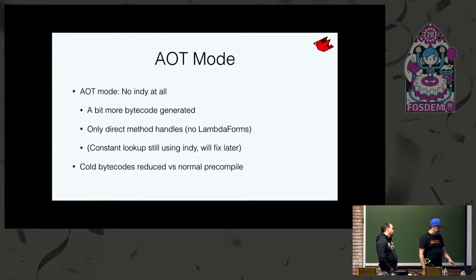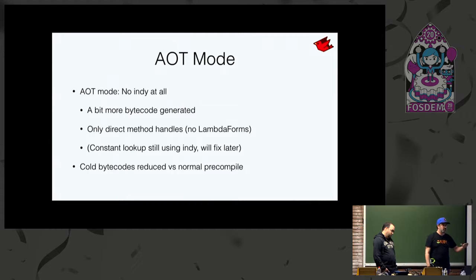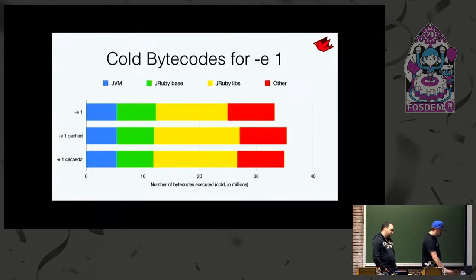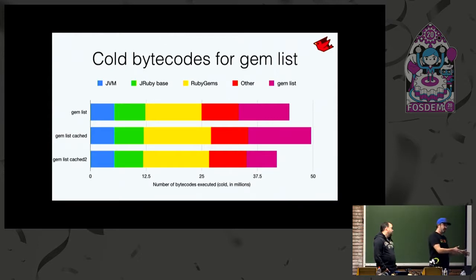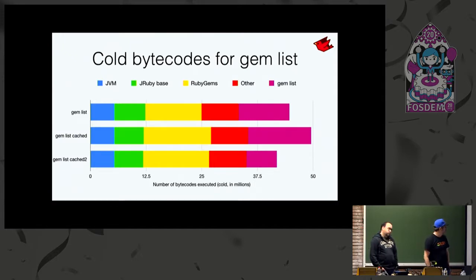The results here still use invokedynamic for constant lookup, but almost everything else uses equivalent bytecode with a little less dynamic dispatch — less cold bytecode to run. We got a good reduction: a slight improvement from the original cached version, and in the case of running a larger command we start to see fewer cold bytecodes and a little boost from pre-caching. The plan is to emit less efficient, simpler bytecode for class bodies and script bodies, but use invokedynamic for methods and blocks called a lot — a happy medium.